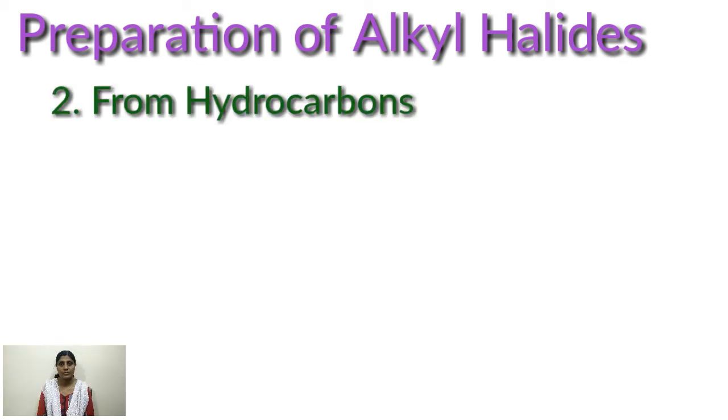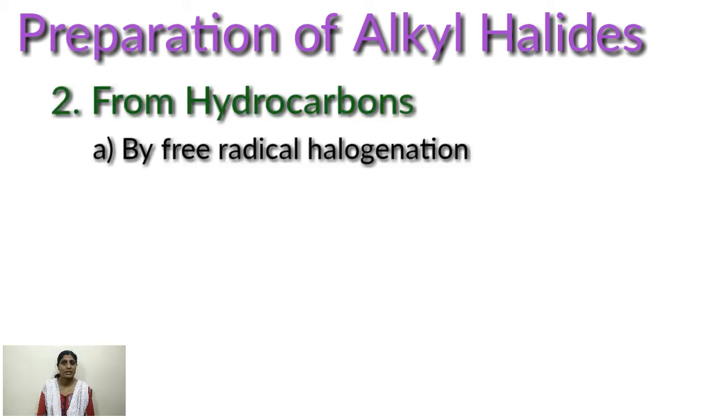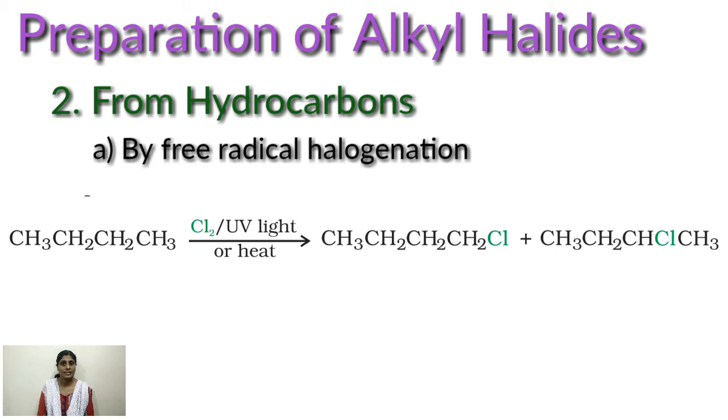Second one from hydrocarbon by free radical halogenation. Last time we have studied free radical mechanism of halogenation. Free radicals are formed when exposed to UV light or by heating. That is free radical chlorination or bromination of alkanes gives a complex mixture of isomeric mono and polyhalogenated alkanes.